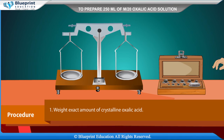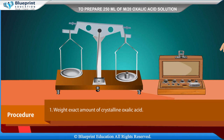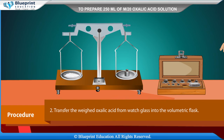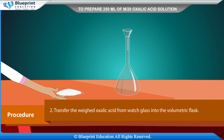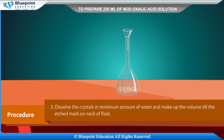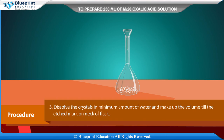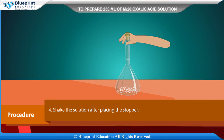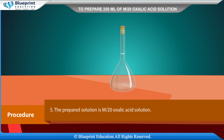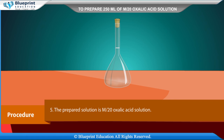Procedure: Weigh the exact amount of crystalline oxalic acid. Transfer the weighed oxalic acid from the watch glass into the volumetric flask. Dissolve the crystals in a minimum amount of water and make up the volume till the etched mark on the neck of the flask. Shake the solution after placing the stopper. The prepared solution is M/20 oxalic acid solution.